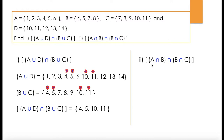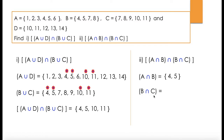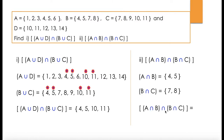Second question: (A intersection B) intersection (B intersection C). A intersection B — common elements between A and B — gives {4, 5}. B intersection C — common elements between B and C — gives {7, 8}. Taking the intersection of {4, 5} and {7, 8}, they have nothing in common, so this intersection gives us an empty set.